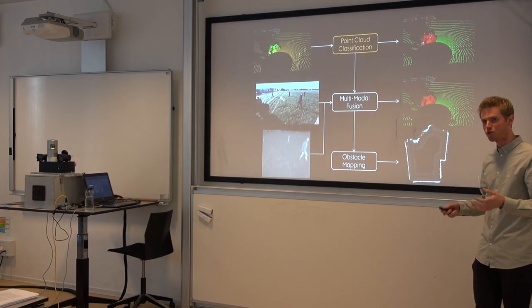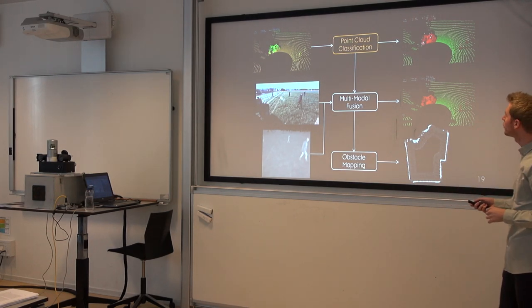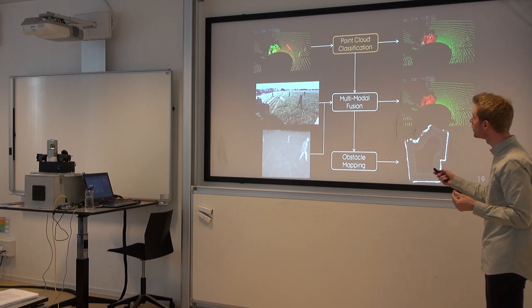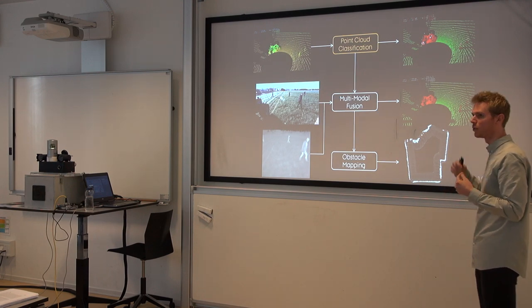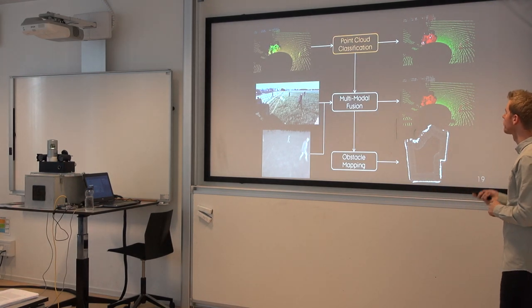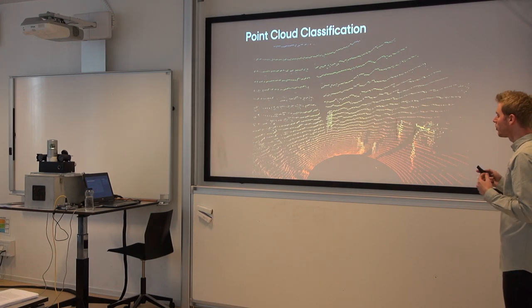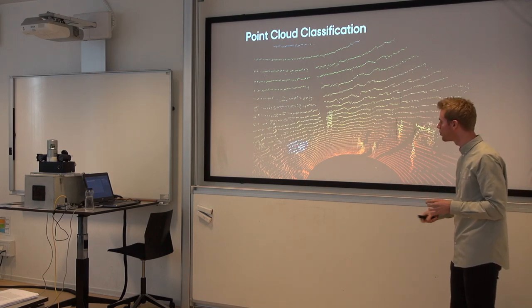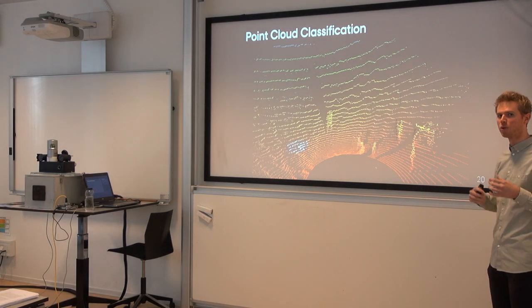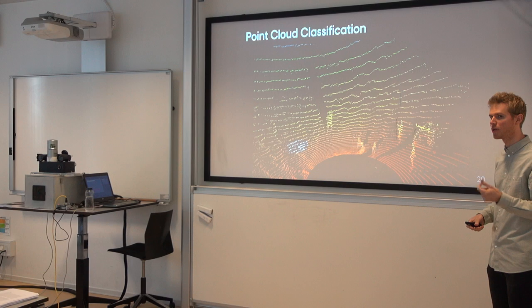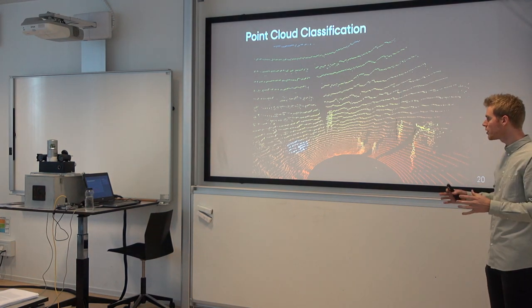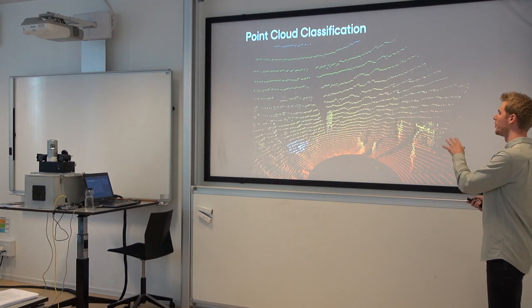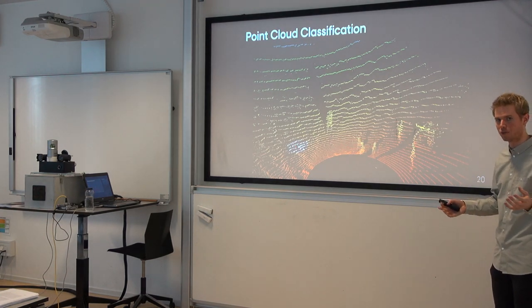Now we have data and ground truth annotations. We can look at the first task: point cloud classification. The task is to assign each point an object label — does it represent the ground, vegetation, or an object? The traditional approach is to look at the local neighborhood of each point, compute statistics such as height, shape, and orientation, and apply a classifier to predict whether the point belongs to an object, vegetation, or ground.